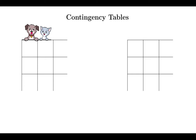Suppose I want to study dogs and cats in the small town that I grew up in, and there will be some dogs or cats with fur and some with hair. In this two by two table, I will record all four numbers. Up here is the number of dogs with fur, to the right is the number of cats with fur, in the bottom row is the number of dogs with hair, and then cats with hair.